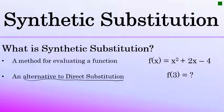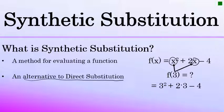In this example, evaluating f of 3 would be fairly simple with direct substitution. You would just have to substitute every occurrence of x with the value of 3, which would result in 3 squared plus 2 times 3 minus 4. 3 squared is 9, 2 times 3 is 6, and the result of 9 plus 6 minus 4 is 11. So the value of f of 3 by direct substitution equals 11.